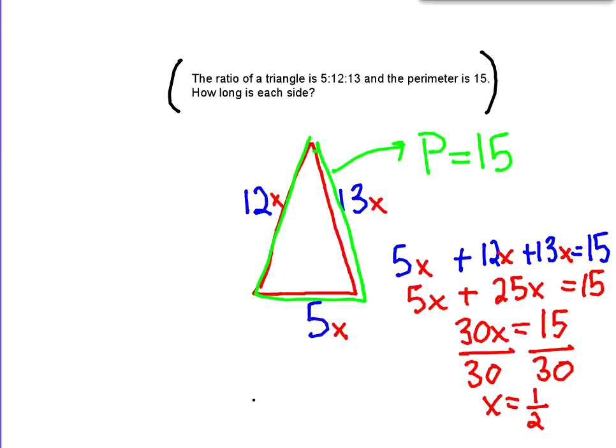So we know that x equals 1 half. So then we have to multiply each side by that. So 5 times 1 half first, so we have 5 times 1 half, which is going to equal, if you do it on a calculator, 2.5.